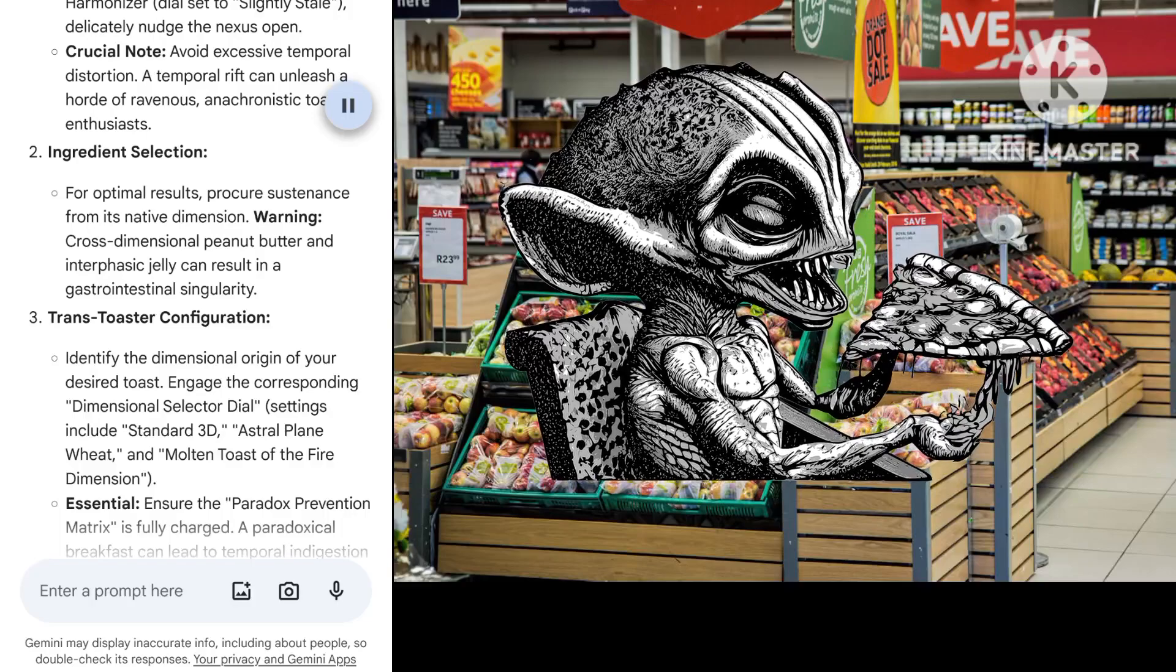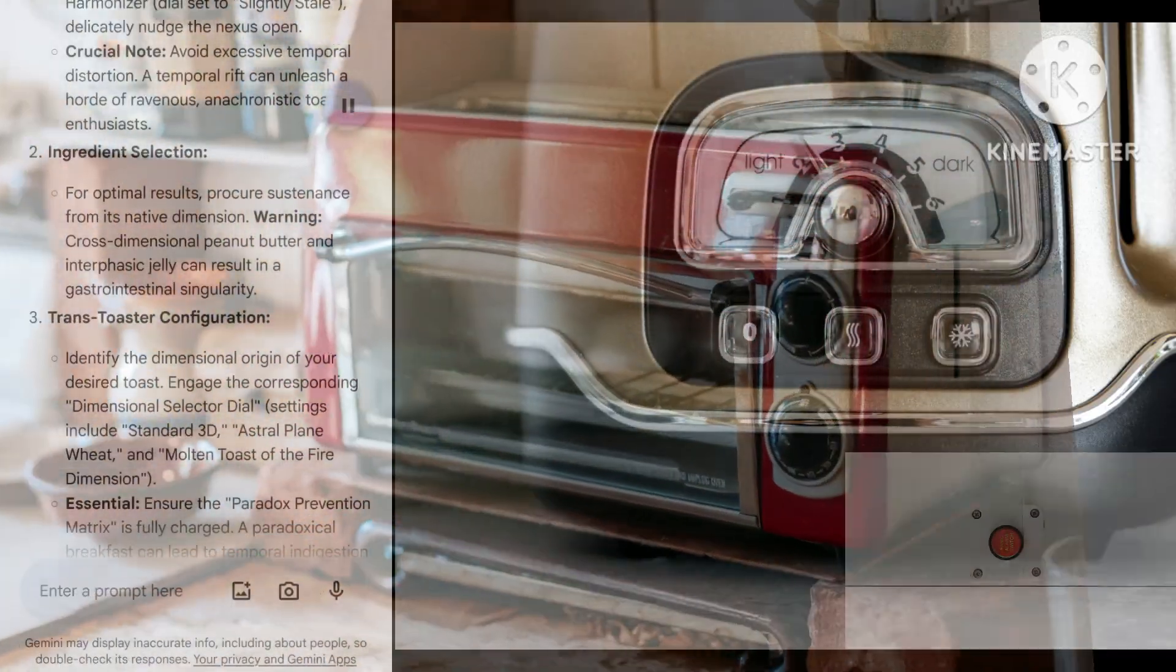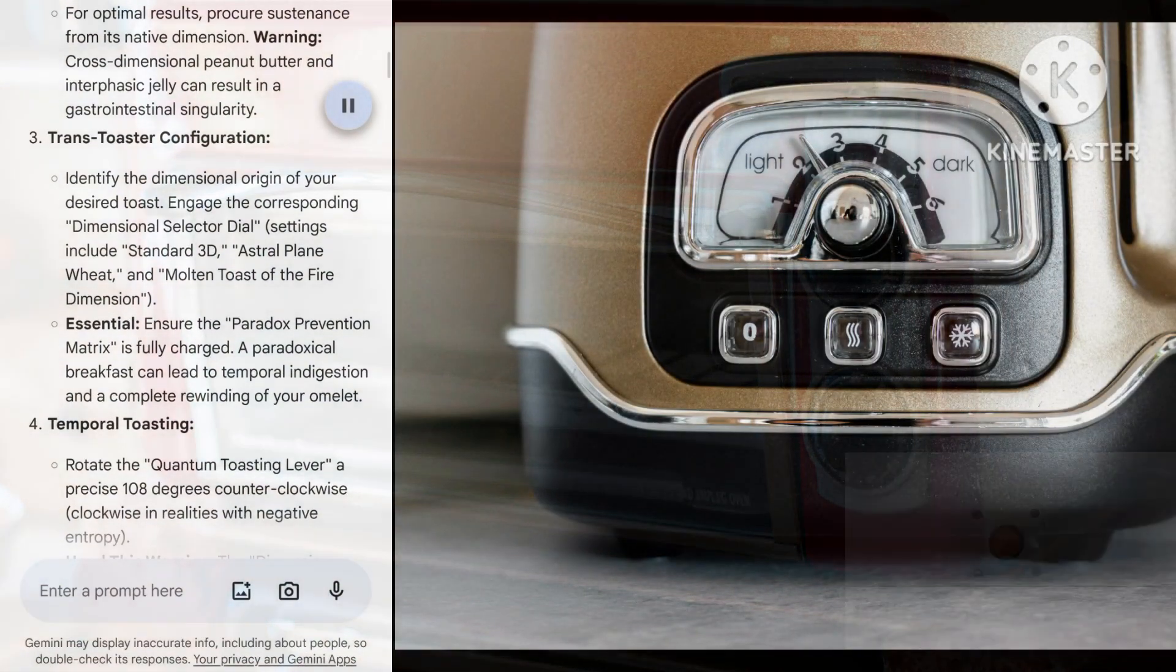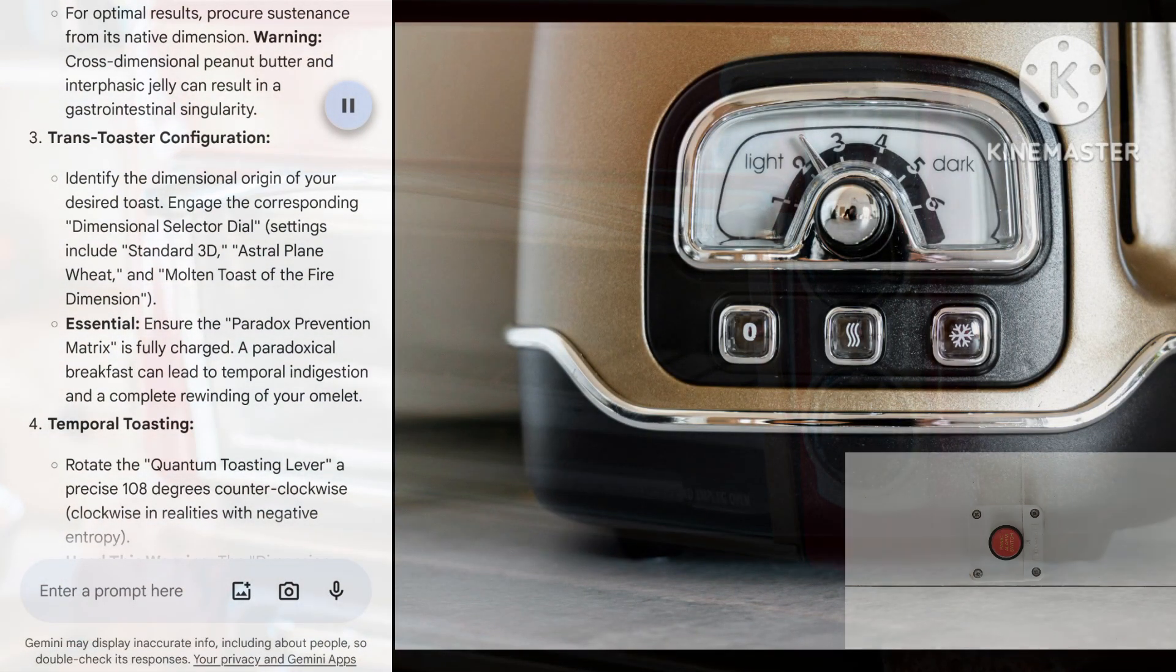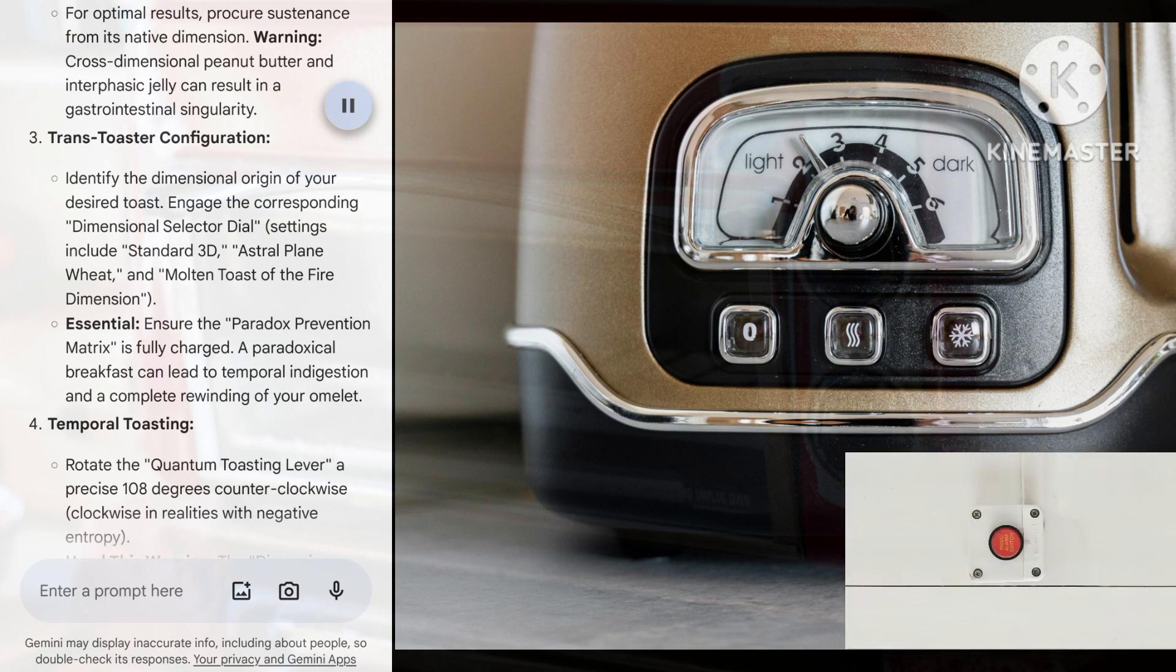3. Trans-Toaster Configuration: Identify the dimensional origin of your desired toast. Engage the corresponding dimensional selector dial. Settings include Standard 3D, Astral Plain Wheat, and Molten Toast of the Fire Dimension. Essential: Ensure the Paradox Prevention Matrix is fully charged.